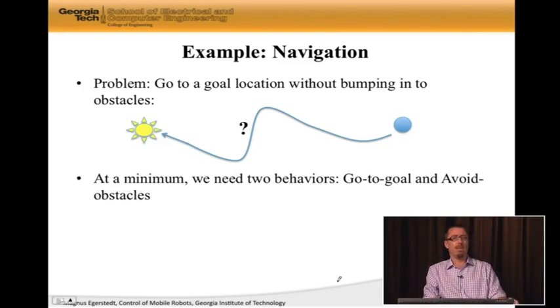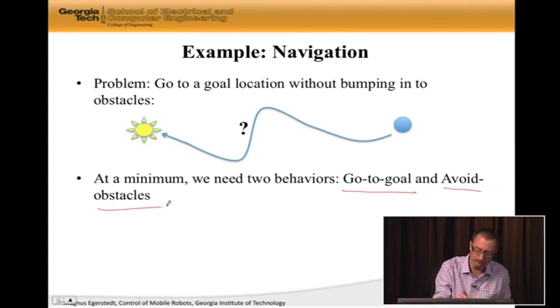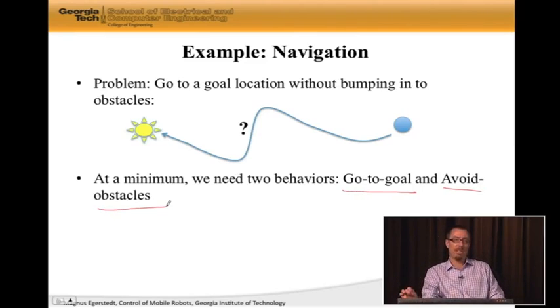At the minimum, we really need two behaviors: go-to-goal and avoid obstacles. So what we're going to do over the next couple of lectures is develop these behaviors, then deploy them on a robot and see if they're any good or not.